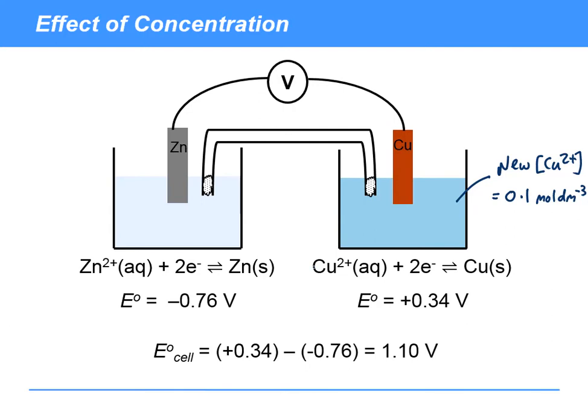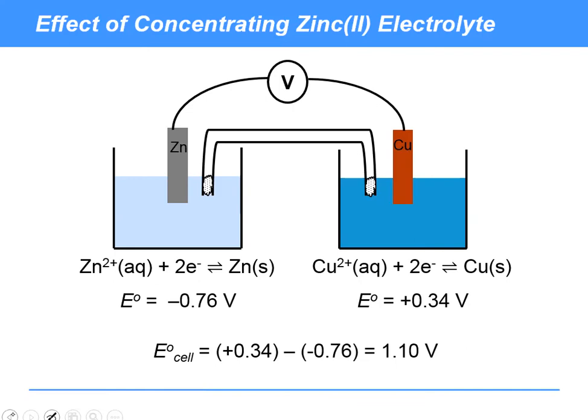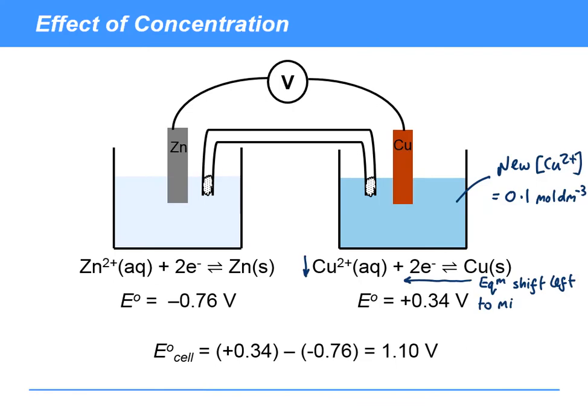Well, the way to think about this is to think about this redox equilibrium. It's not going to have any effect on the zinc one, but it's going to affect this redox equilibrium. If we think about carefully what's going to happen here, as we decrease the copper 2 plus concentration, then the equilibrium system is going to respond to try and minimize that decrease. In other words, it's going to shift to the left.